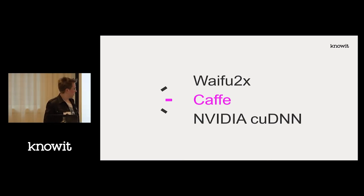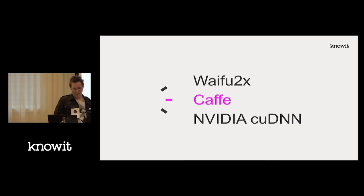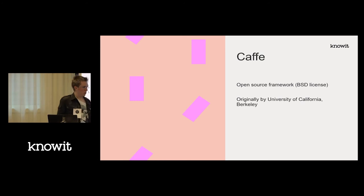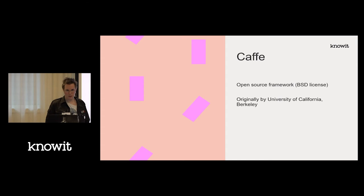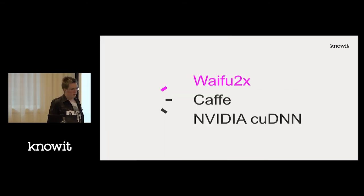Caffe is the framework that waifu2x works on. It's open source — NVIDIA is not open source but Caffe and waifu2x are. Caffe works as an intermediary between the NVIDIA tools and the program. It was made by UC Berkeley and is open source.